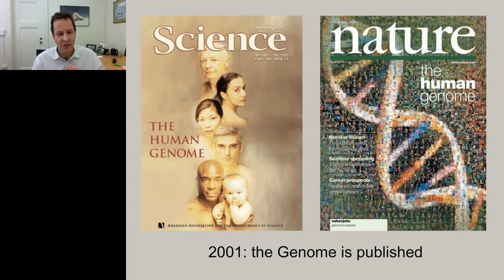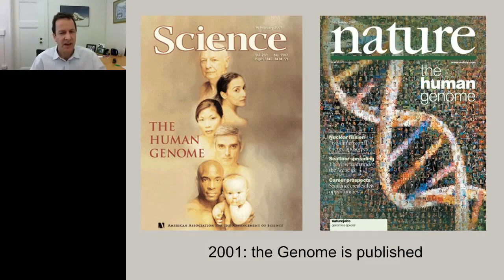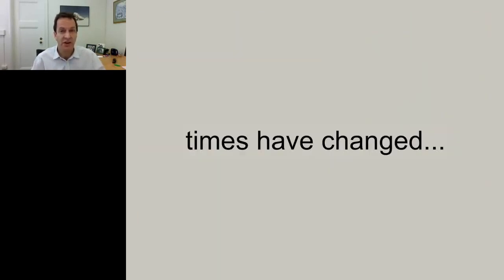Let me go back in time to 2001, when the Human Genome was published. There was an exciting race to get that done, concluding with two publications in February 2001—one in Science by a private group led by Celera Genomics, and another by a large publicly funded consortium published in Nature. That was a combination of work that started in 1989 when the Human Genome Project was launched. Times have changed due to the introduction of Next Generation Sequence data.